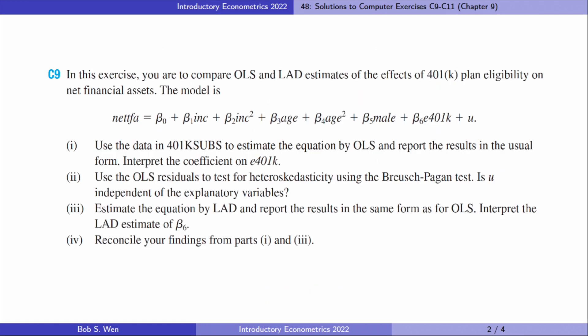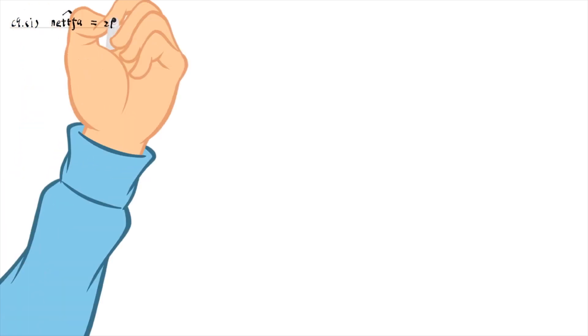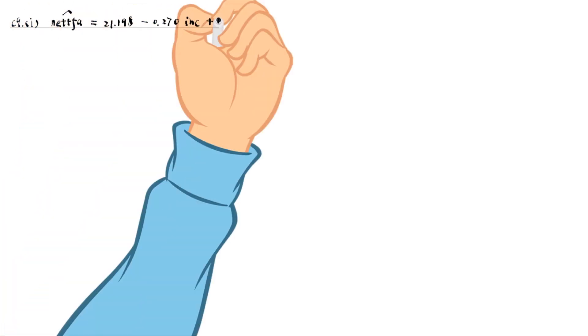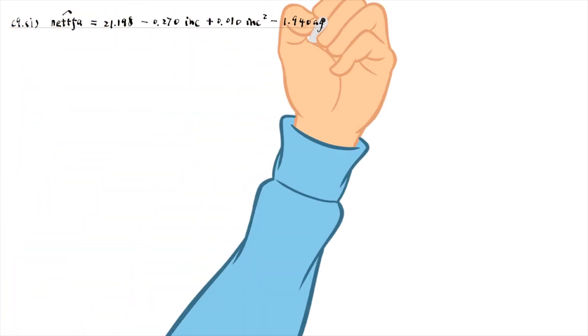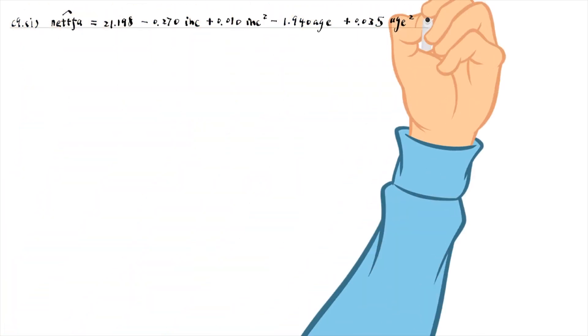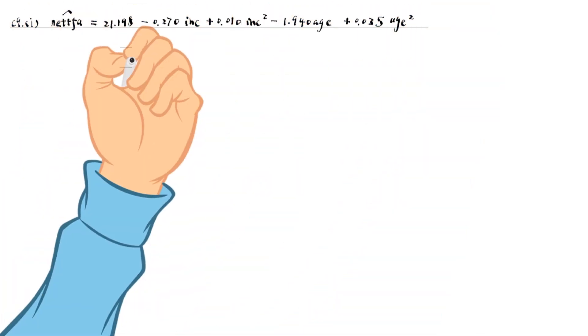We will compare the ordinary least squares, OLS, and the least absolute deviations, LAD, estimates. For part 1, the estimated equation by OLS is as follows.